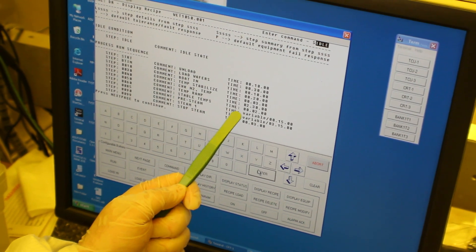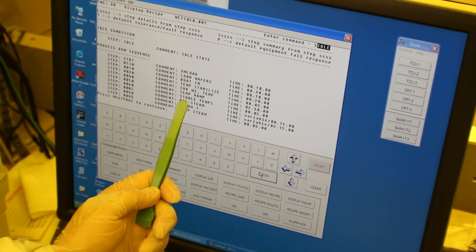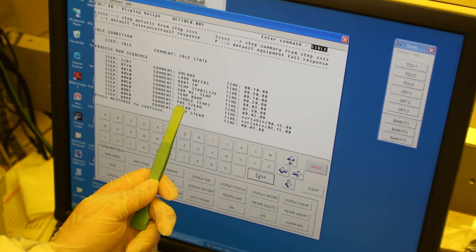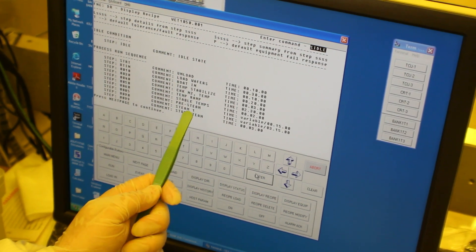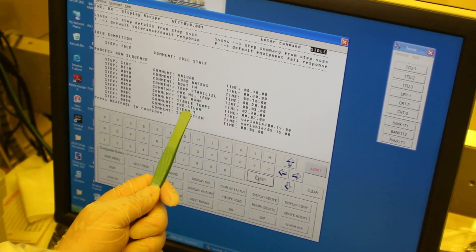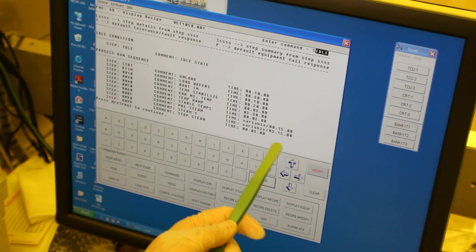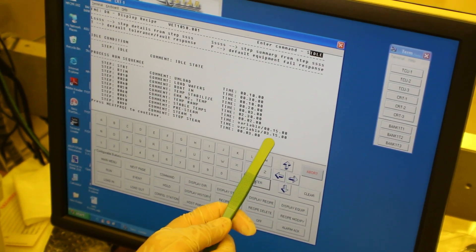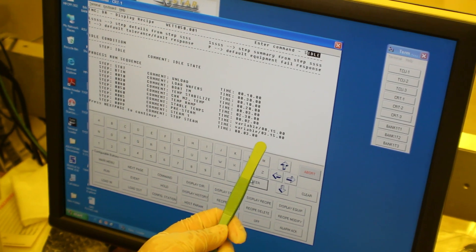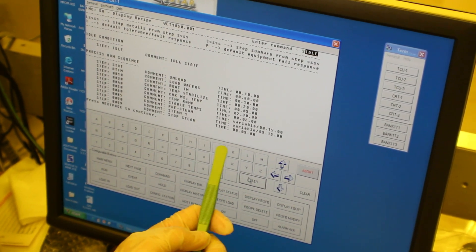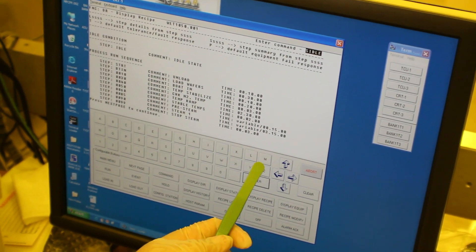And then we do a stable temp, and then the pre-steam flows pure oxygen to clean all the nitrogen out of the tube. And then you notice here with steam one, the thing I want to point out about steam one, right now we have an entry of three hours and 15 minutes. We can change that time to vary the thickness of our oxide.